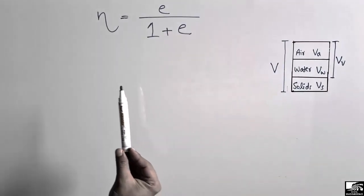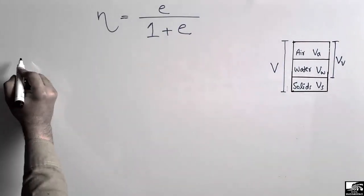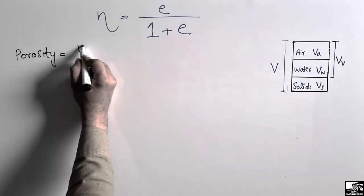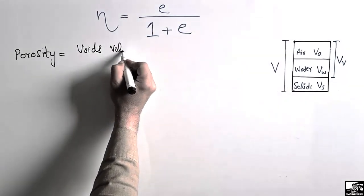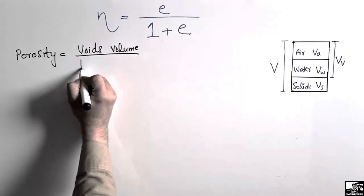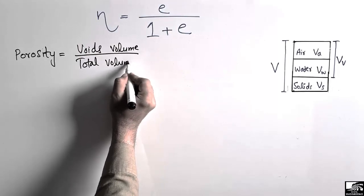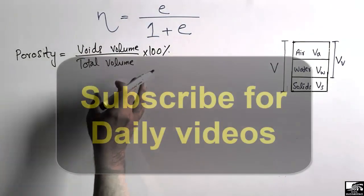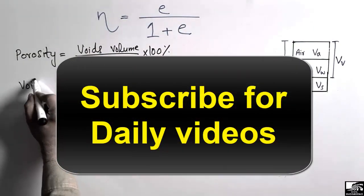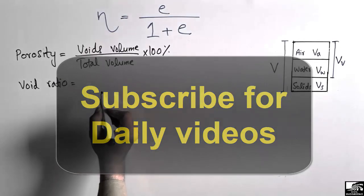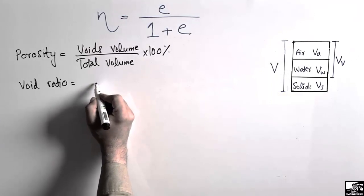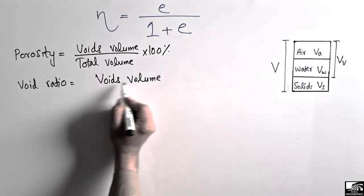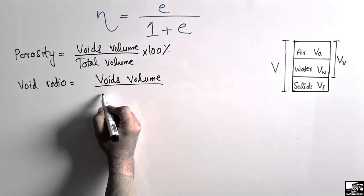Now, how to prove this relation. First, let's define porosity. Porosity is equal to the void volume divided by the total volume of the soil, multiplied by 100%. Now, the void ratio can be defined as the ratio of the void volume divided by the volume of the solids.